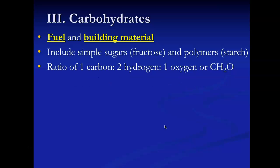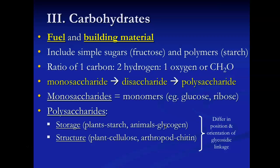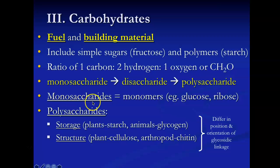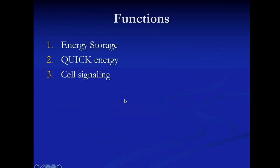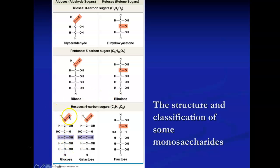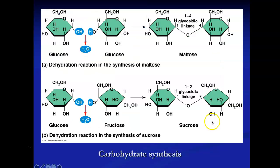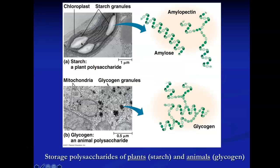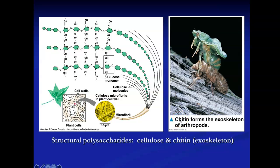For carbohydrates, the element ratio is carbon to hydrogen to oxygen in a 1:2:1 ratio. Functions include energy storage, quick energy, cell signaling, and cell recognition. The monomer is a monosaccharide — example: glucose. A disaccharide example is sucrose. Polysaccharide examples are starch, cellulose, glycogen, and chitin, and you should know the differences between those.